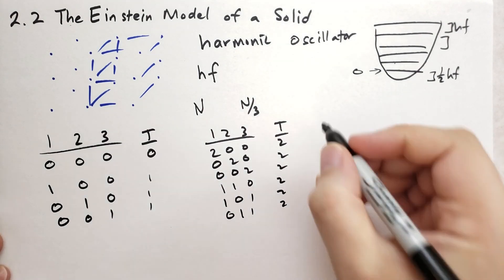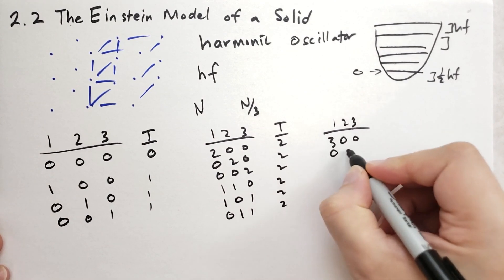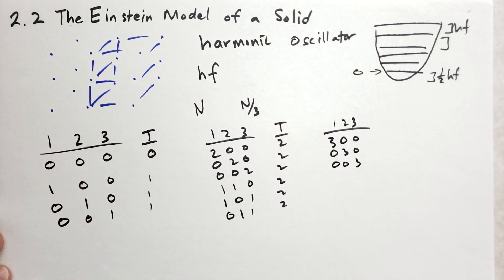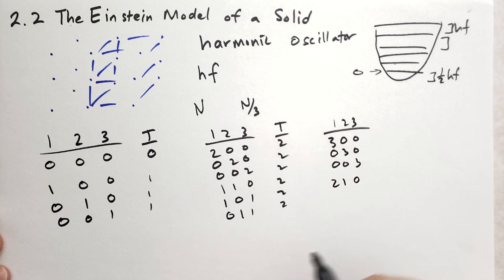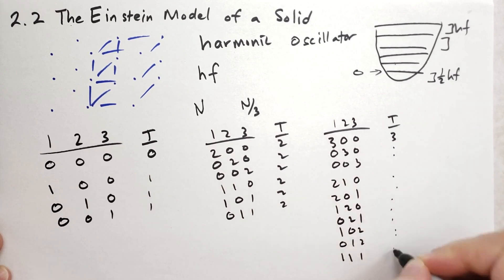We can go on and do the ones for three. We have three independent oscillators. So we can have three, zero, zero; zero, three, zero; zero, zero, three. So this is three possible ways that energy can be allocated. Then we have two, one, zero; two, zero, one; one, two, zero; one, zero, two; zero, two, one; and zero, one, two. And then finally we have one, one, one as a possible. And these will all have a total energy of three.